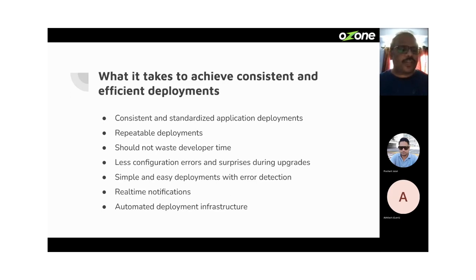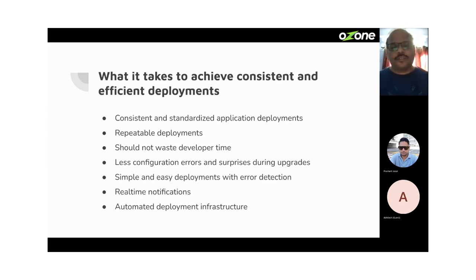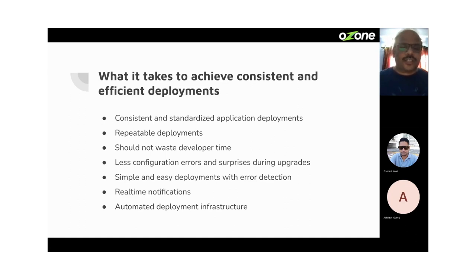We should have simple, easy, and error-free deployments. What happens with manual deployments is they cause human errors. The common notion is 'it works in my laptop, it works in my environment.' That's why Docker came along — we ship our own Docker image. But even then, it exploded into microservices and a whole new set of problems arose because of complex communication mechanisms between different microservices. Service meshes come into the picture here, and configuring those service meshes is a different ballgame and very difficult to do without errors.